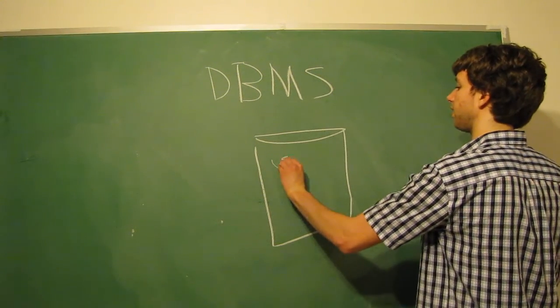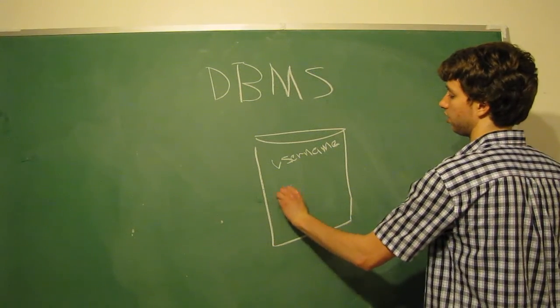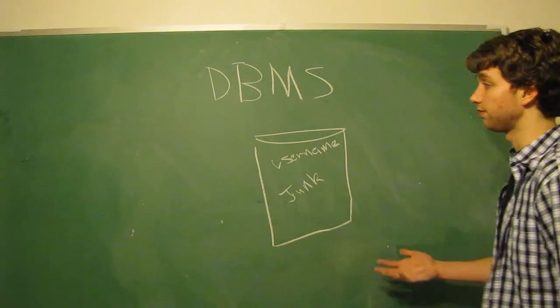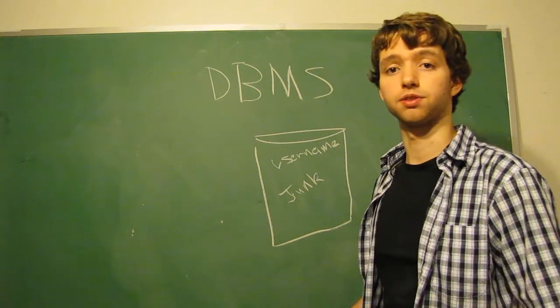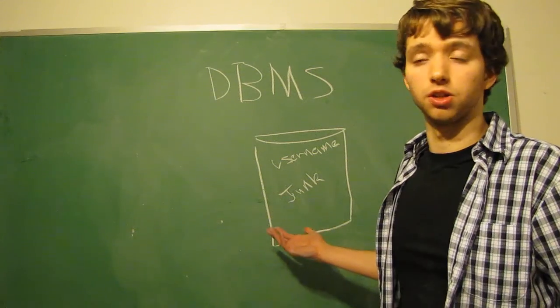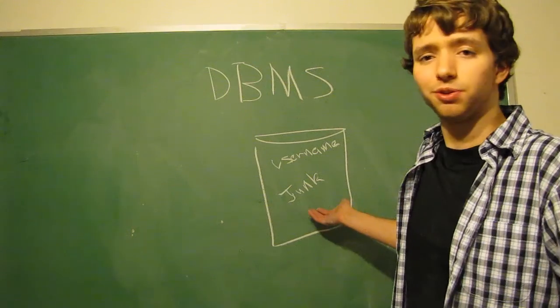So like usernames and passwords and junk and transactions and all this stuff is listed in here. And as you saw in the last video, it looked very similar to a spreadsheet. So what makes it different? We have all this data. Now what do we do?